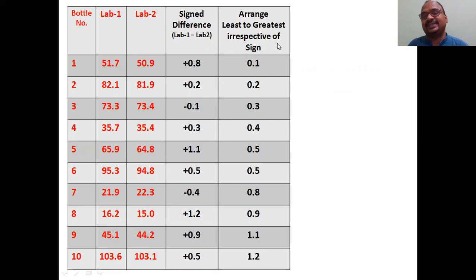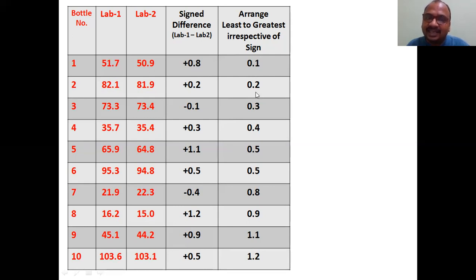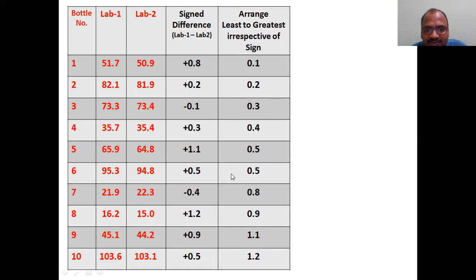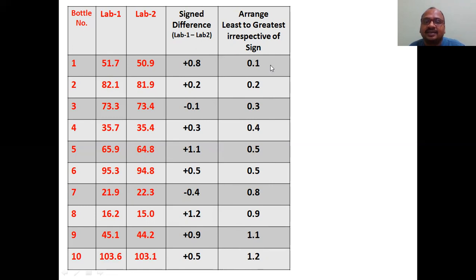Next, arrange from least to greatest — irrespective of sign. That is very important: signs you don't consider in this step. Arrange from least to greatest. The least here is 0.1, then 0.2, then 0.3, then 0.4, then 0.5 — and there is one more 0.5 — then 0.8, 0.9, 1.1, 1.2. Arrange from least to greatest, irrespective of sign.